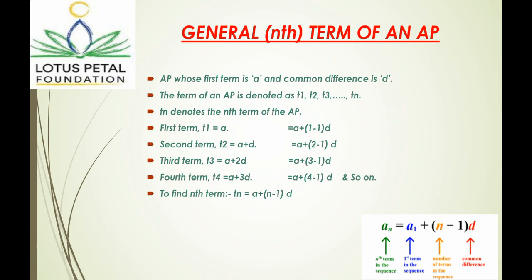Third term, a plus 2d is equal to a plus bracket 3 minus 1 bracket d. And fourth term is equal to a plus 3d, which comes from a plus bracket 4 minus 1 bracket d and so on. To find nth term, there is a formula, which is a plus bracket n minus 1 bracket d.